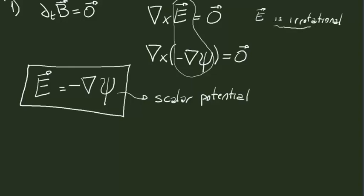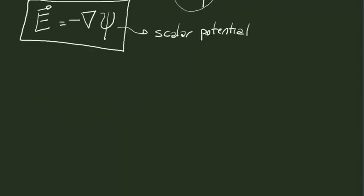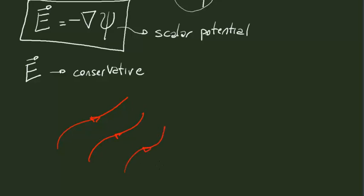When the curl of a vector field is zero, in mathematics we say the field E is irrotational. But what does this mean physically? In physics, irrotational fields are called conservative fields. If the field is conservative, imagine we have an electric field with a certain distribution in space and we do the usual line integral of the electric field between point A and point B, following a certain path — say path C1.